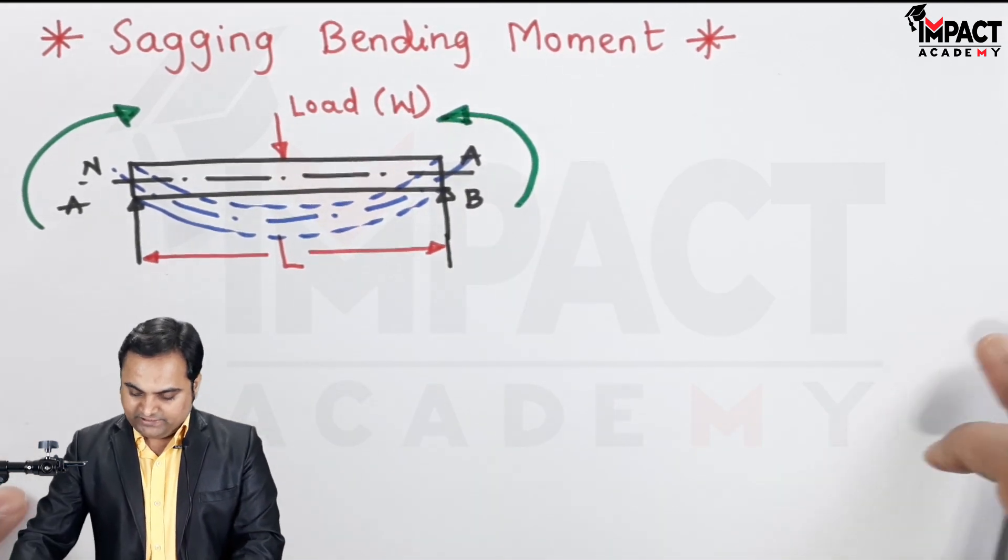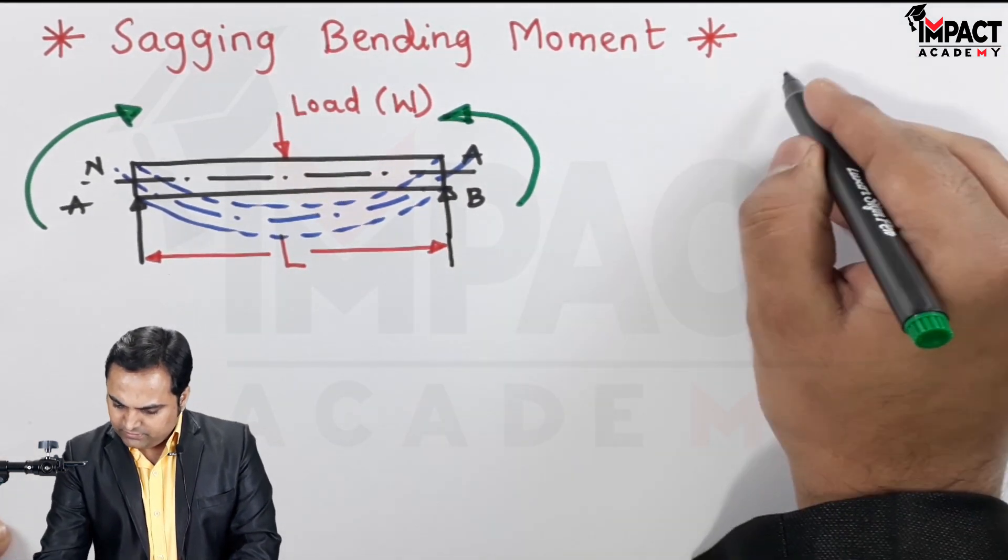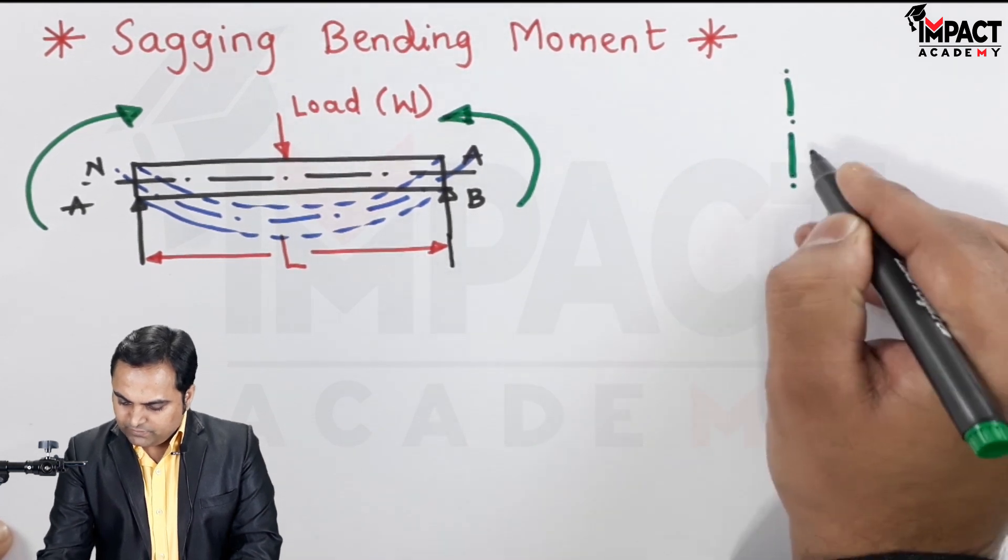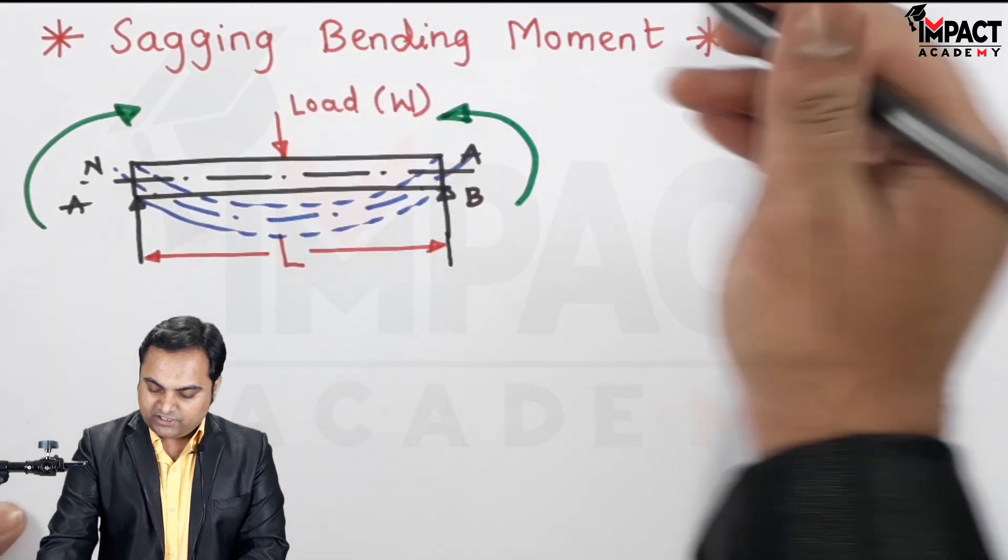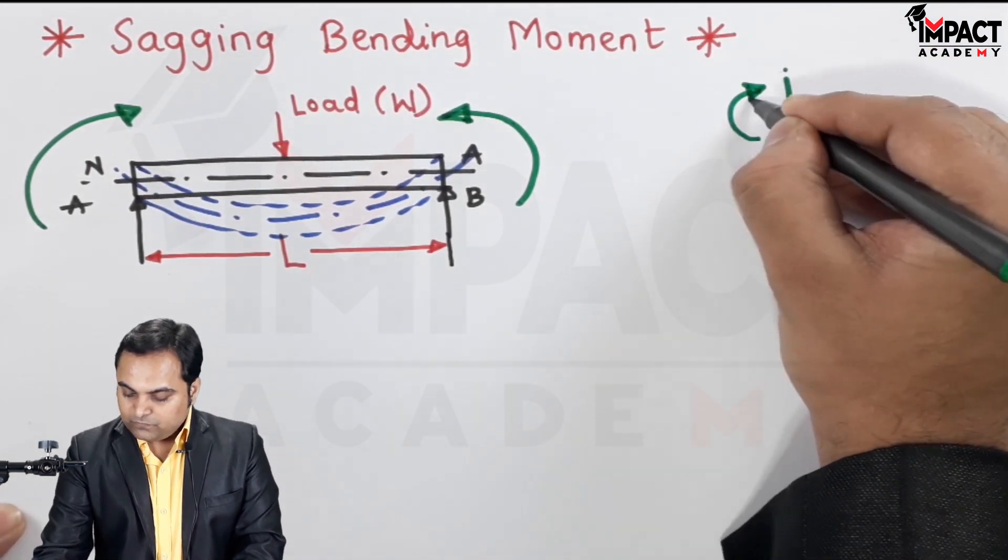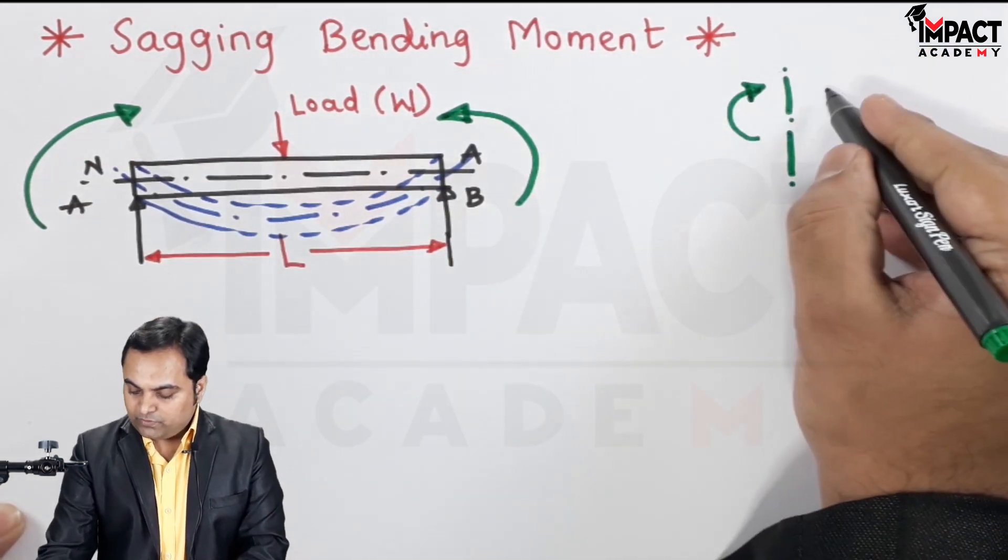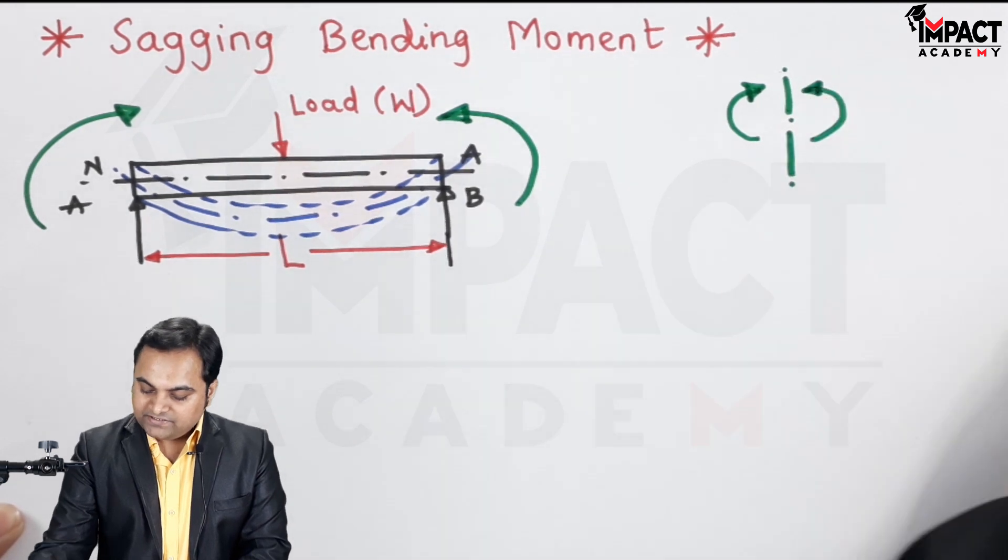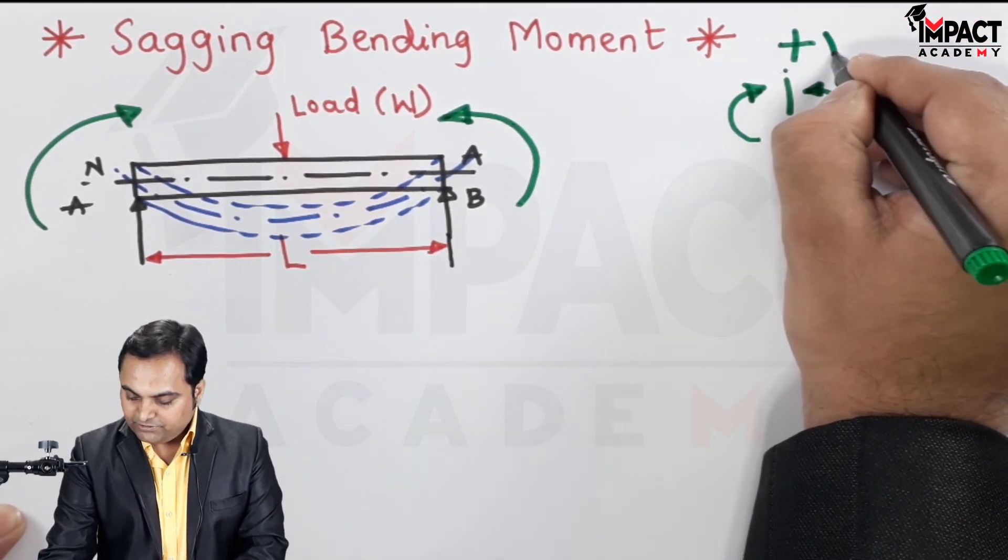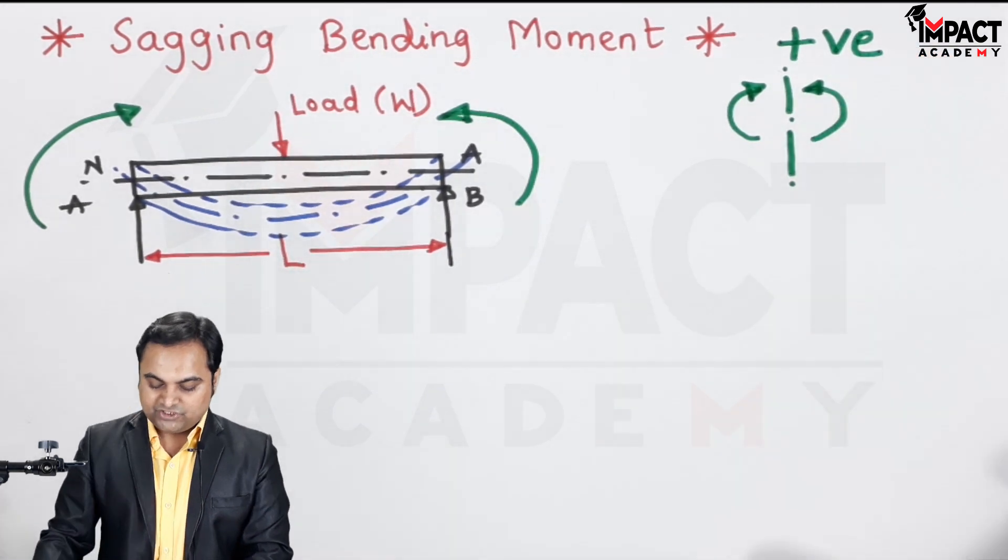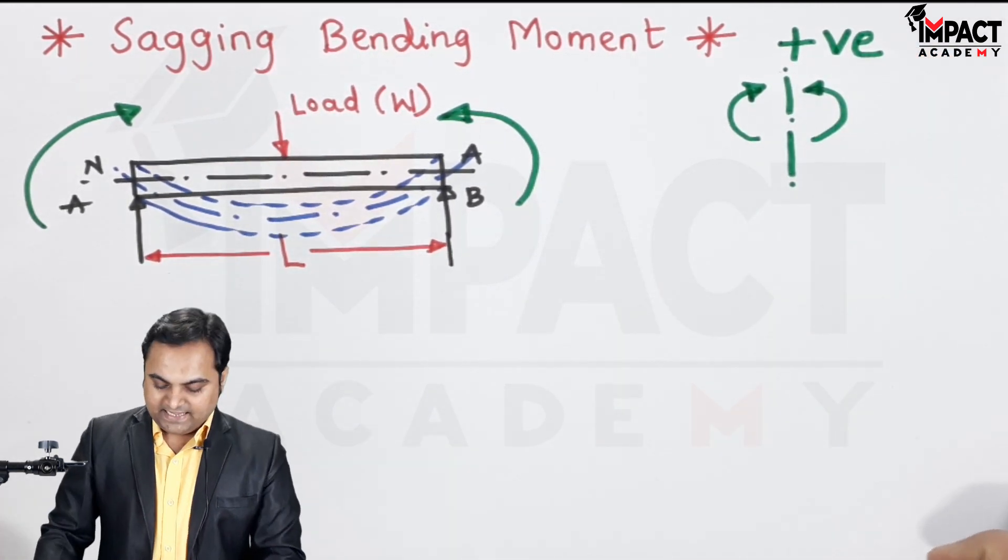And for that, here I'll explain it with a sign convention. When I take a section on this beam, to the left there is a clockwise moment, on to the right there is an anti-clockwise moment. And sagging bending moment is considered as a positive bending moment, so these sign conventions are positive.